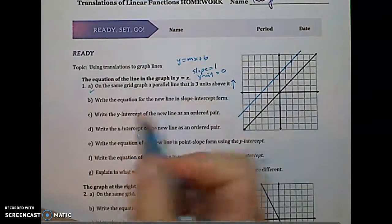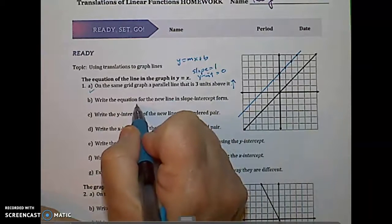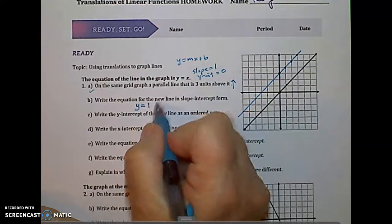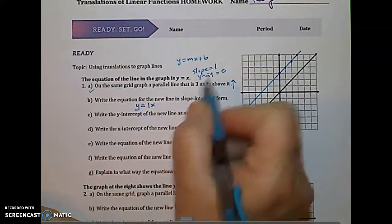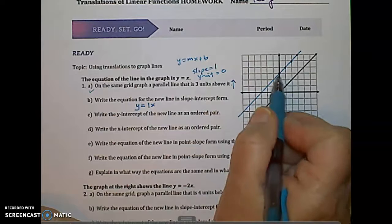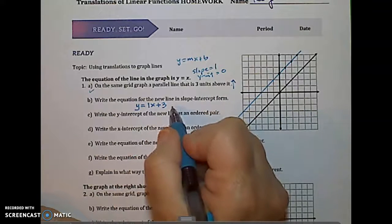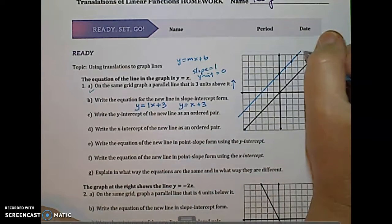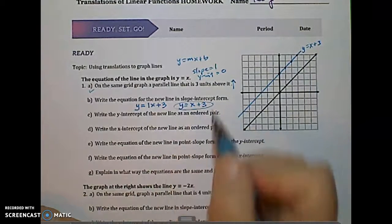So we've got part a done. Write the equation for the new line in slope-intercept form. So y equals, the slope is one. Then we just put in x. The slope is always the coefficient in front of the x variable. And then our y-intercept is three units above zero, or just three. Now normally you don't put the one in here in front of the x. So we would just write y equals x plus three. That's what this equation is.